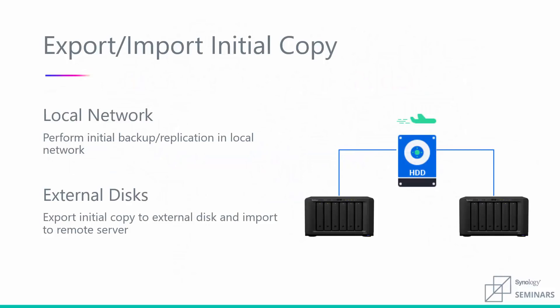One way is to bring that backup unit on-site to use your local network to copy the backup. You bring it in-house, connect it to your local network, choose it as your backup target, and once that backup has been seeded onto the second unit, ship it to your secondary location and relink the backup. Another easy option is to export onto a hard drive. In that 2 terabyte example, you could connect a 2 terabyte USB hard drive, export the data onto that drive, ship it to the off-site location, copy it onto the secondary unit, and then relink the backup task. Let me jump into a demo to show you exactly what that looks like.